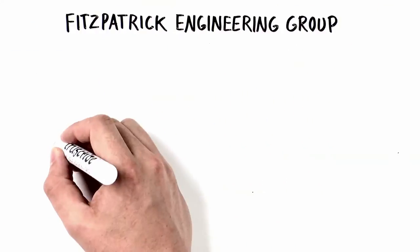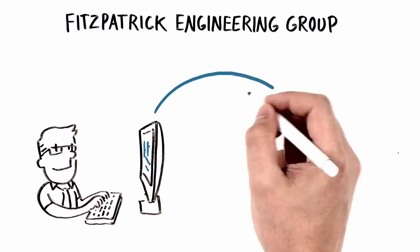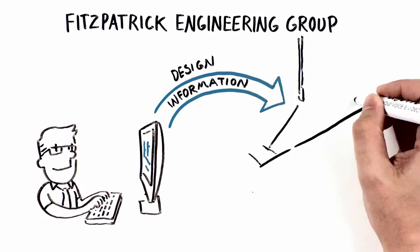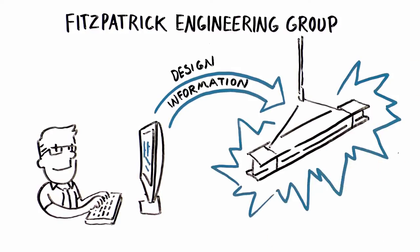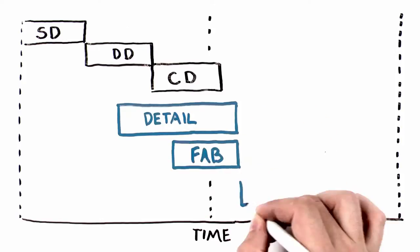Fitzpatrick Engineering Group is transforming the way structural steel is designed and delivered. Our process allows us to transfer information to the detailer during the design process, shortening fabrication drawing preparation time from months to weeks.